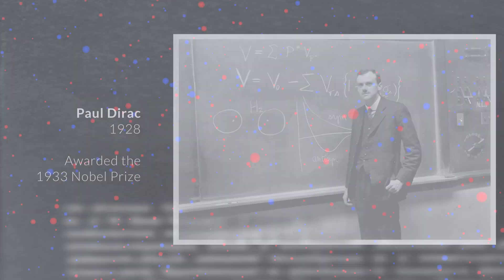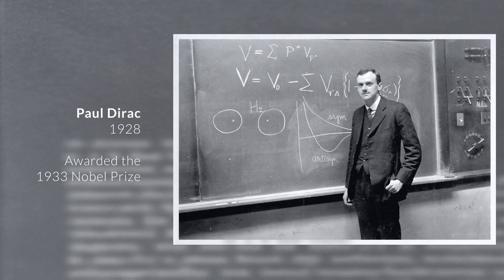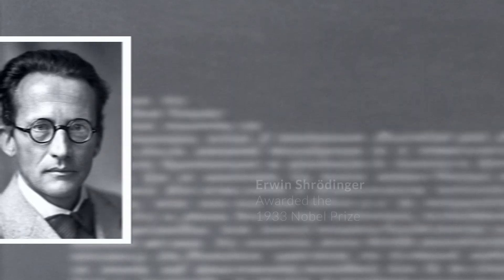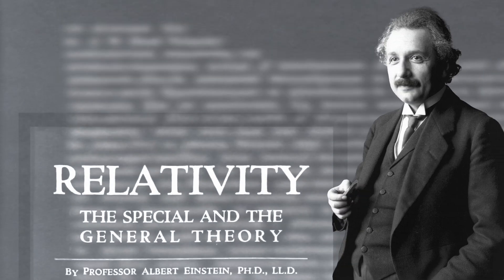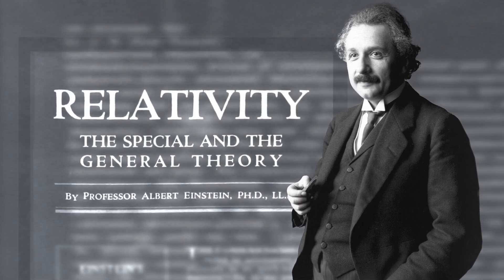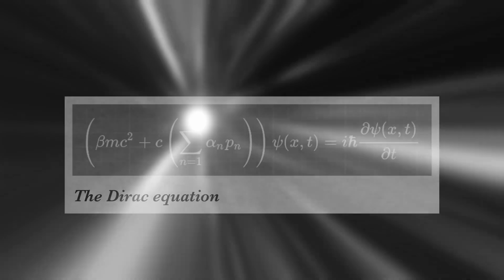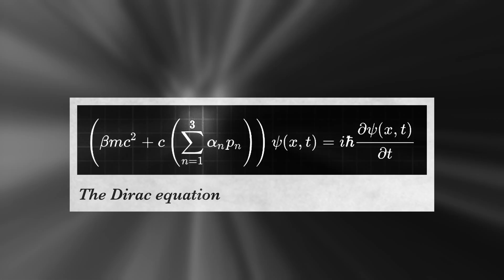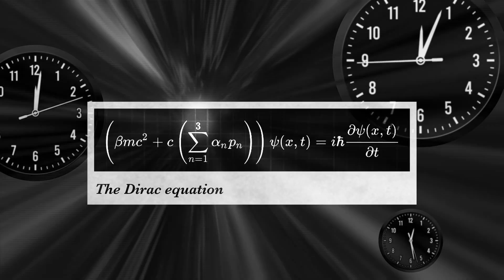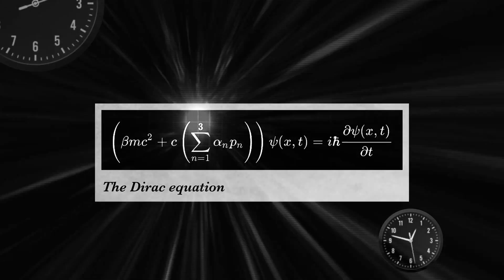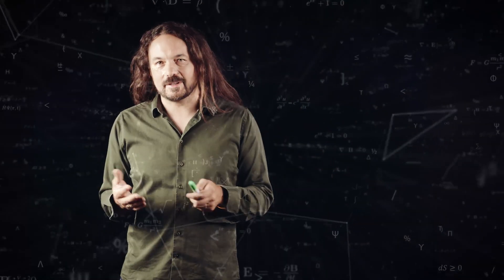It all started in the year 1928, when Paul Dirac united the Schrödinger equation, which describes the evolution of quantum wave functions, with Einstein's theory of special relativity. The Dirac equation describes the movement of an electron at any speed, even approaching the speed of light. But the equation has a surprising property that nobody was really expecting.